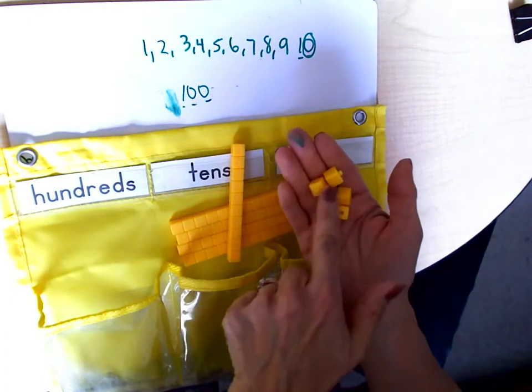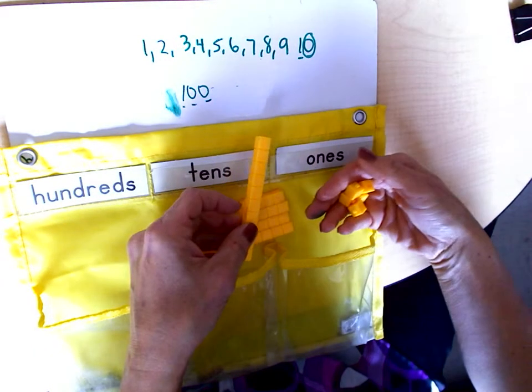So let's see if I have ten. One, two, three, four, five. Don't have enough. So I can't change it for one of these tens.